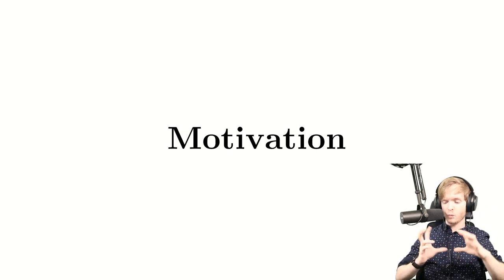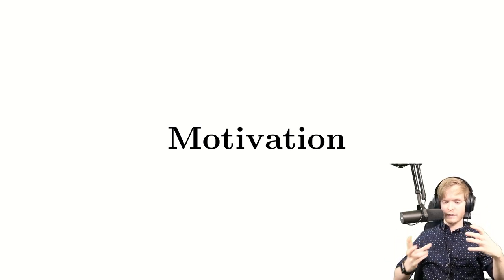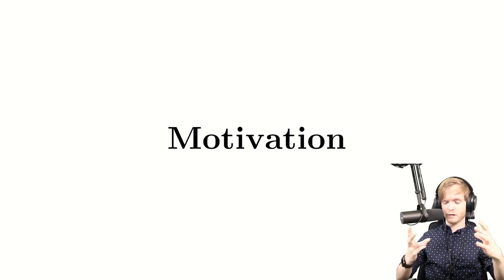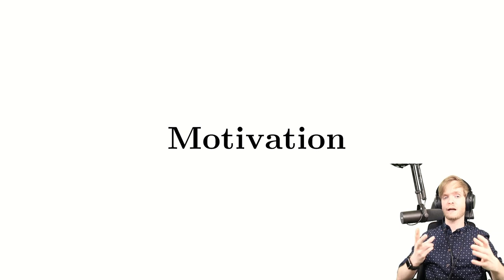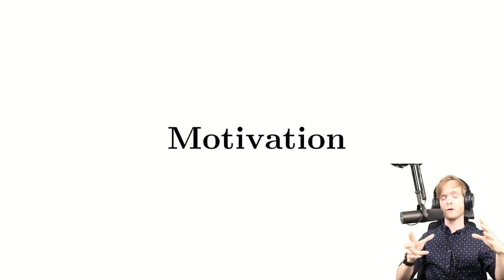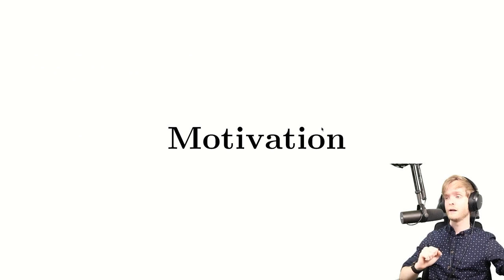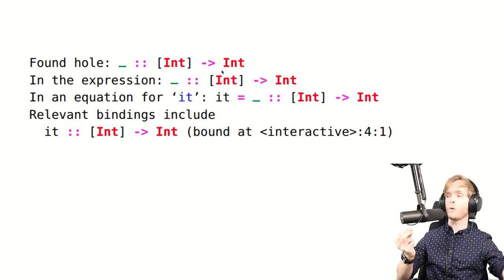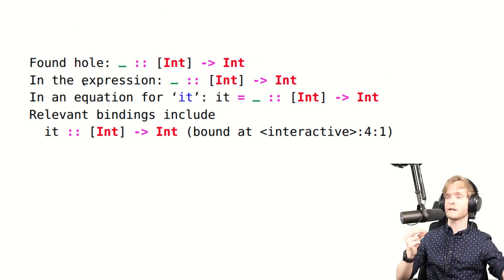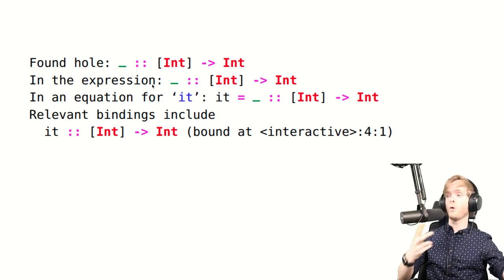In Haskell, you have type systems, and one way that GHC — the Haskell compiler we mostly use — allows you to interact with the type environment is through typed holes. What is a typed hole? You write an underscore somewhere in the code, then you run the compiler and you get an error. The message says it found a hole, tells you where the hole is, and tells you the inferred type of the hole.